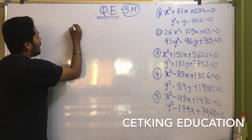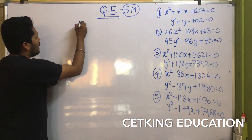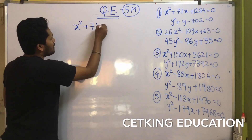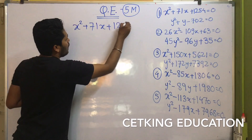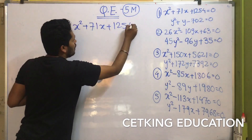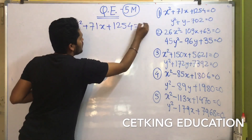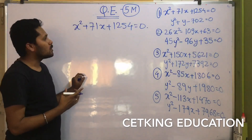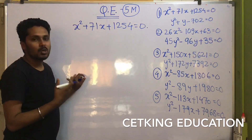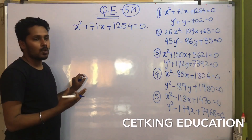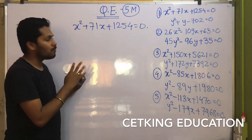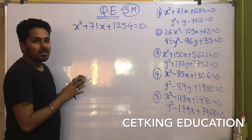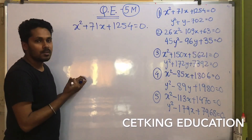The first question is x² + 71x + 1254 = 0. Now you want to solve it in a faster way, so I am going to tell you what is the exact shortcut so you can solve all 5 questions easily.